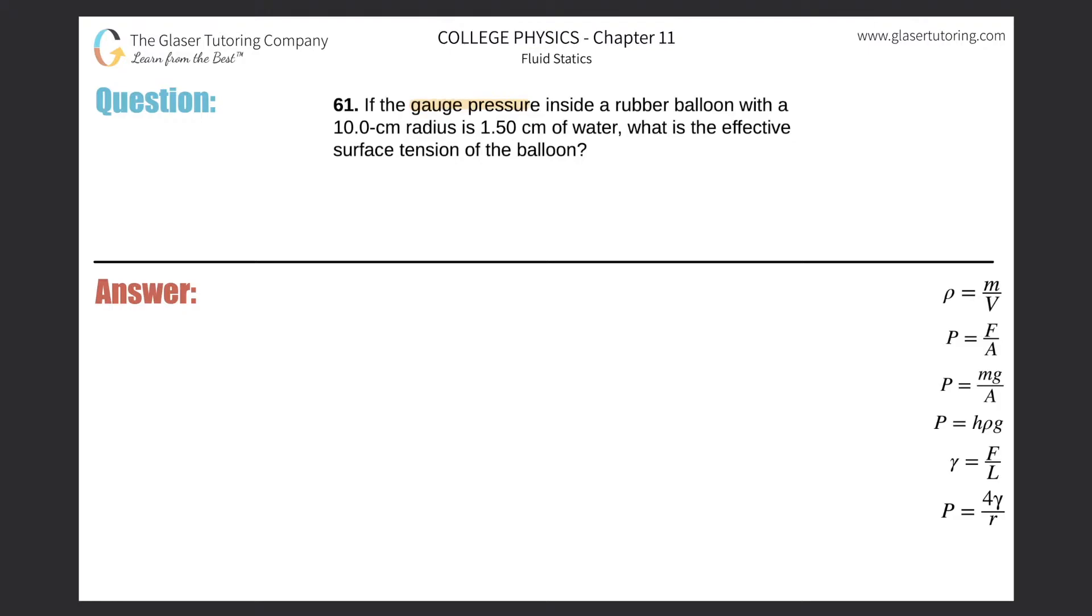Number 61: If the gauge pressure inside a rubber balloon with a 10 centimeter radius is 1.5 centimeters of water, what is the effective surface tension of the balloon? Alright, so first thing is we probably would be best to try to figure out what formula we're using.